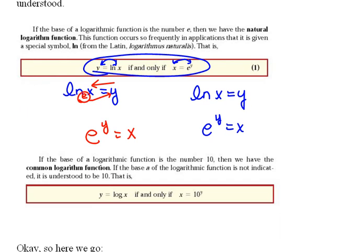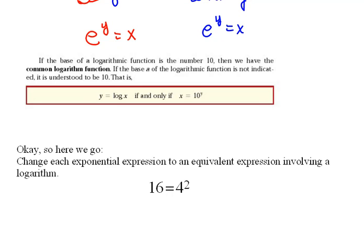The other time that you will not see a base is when we have what we call the common log. The common log looks like log x equals y. It's the word L-O-G log. When we see this, we have an understood base of 10 there. So very interesting. This is called the common log.